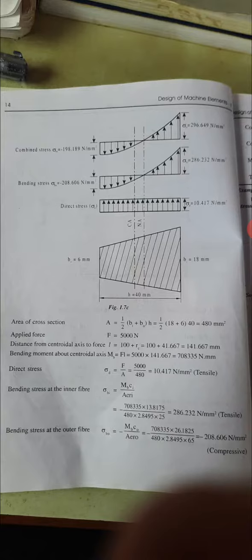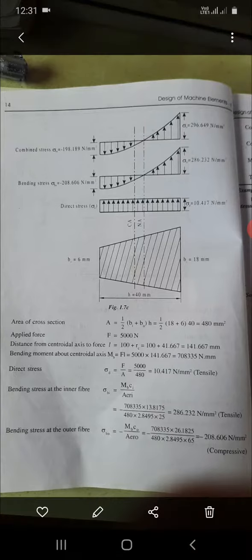Bending moment MB = Fn × L. Multiplying Fn and L, we get the bending moment. Direct stress σD = Fn/A. Bending stress at inner fiber σBI = MB×CI/(E×RI×A). Substitute the values.